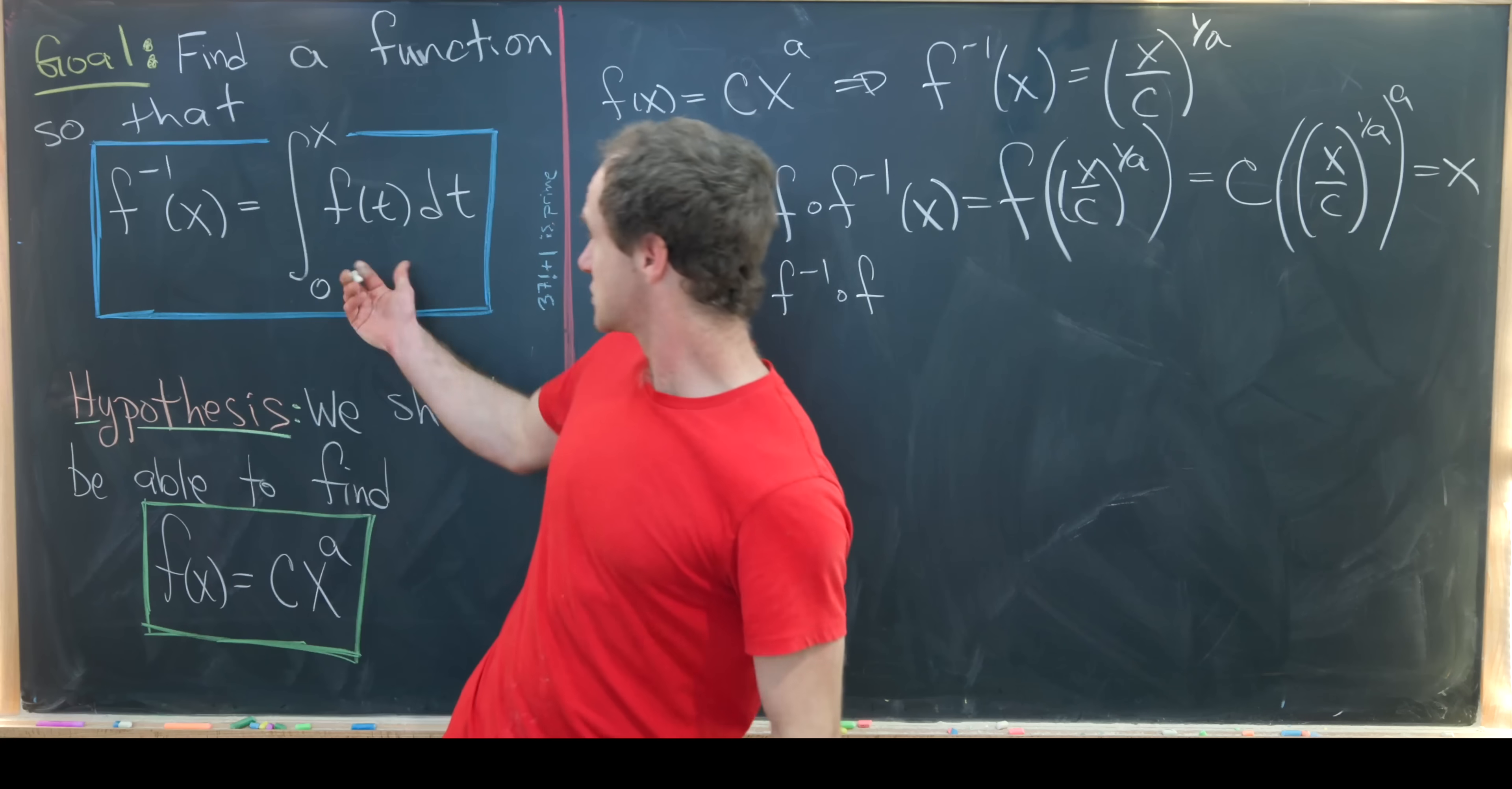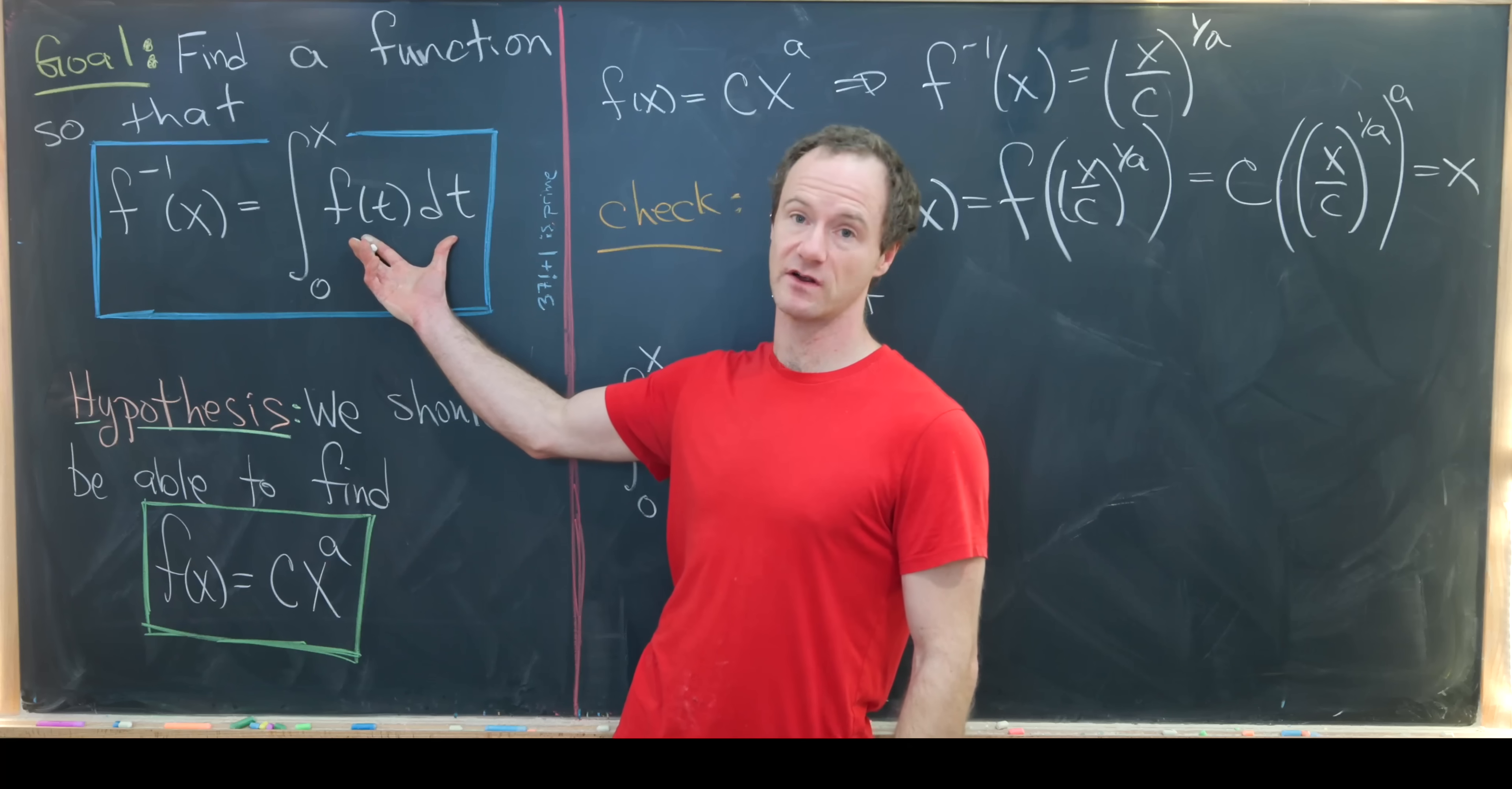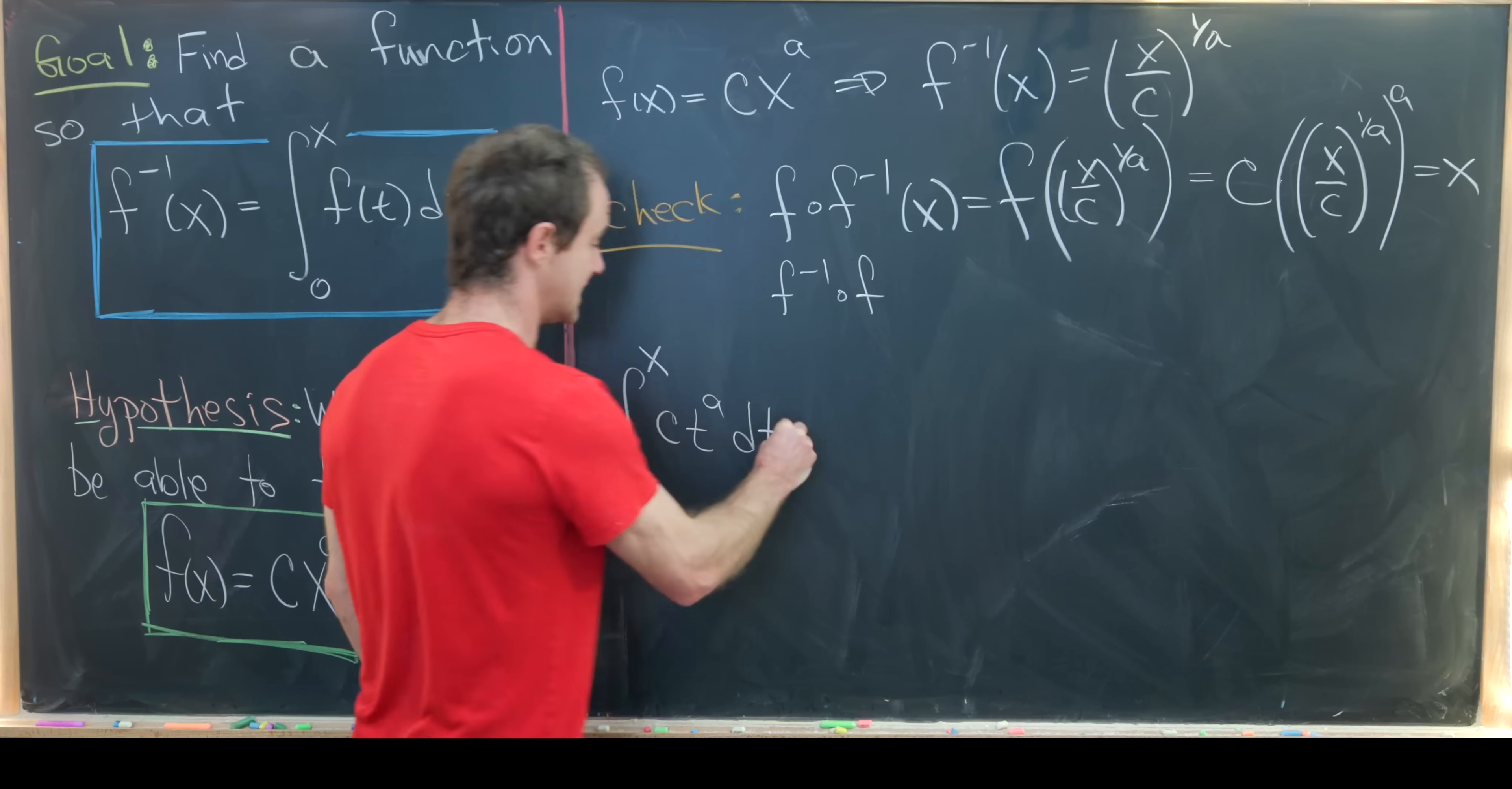Now let's calculate the antiderivative. We've got the antiderivative or the integral from 0 to x—that's the careful way of writing down the antiderivative. You introduce this dummy variable here and put your variable in the exponent. So we've got the integral from 0 to x of f(t)dt, which is c times t to the a dt.